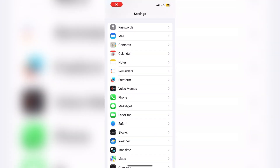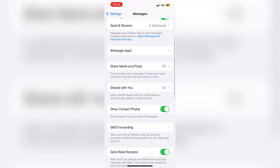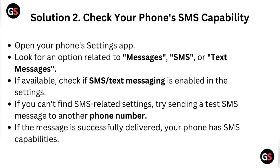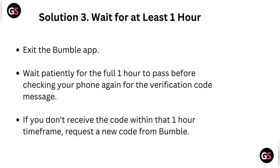Solution two: check your phone's SMS capability. Open your phone's settings app and look for an option related to messages, SMS, or text messages. If available, check that SMS text messaging is enabled. If you can't find SMS-related settings, try sending a text message to another phone number. If the message is successfully delivered, your phone has SMS capabilities.